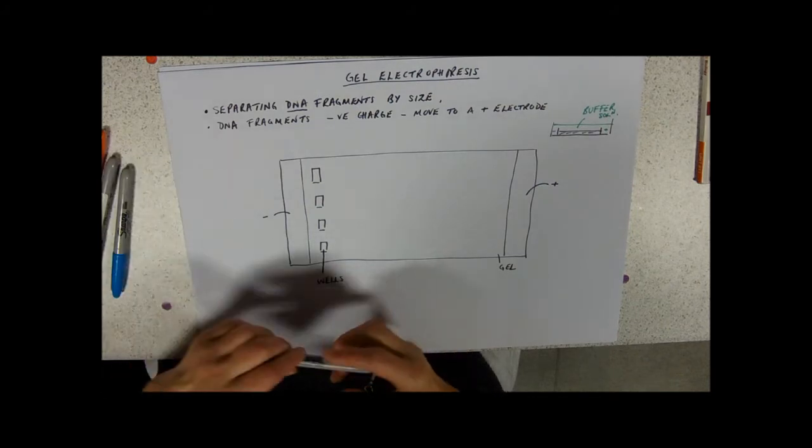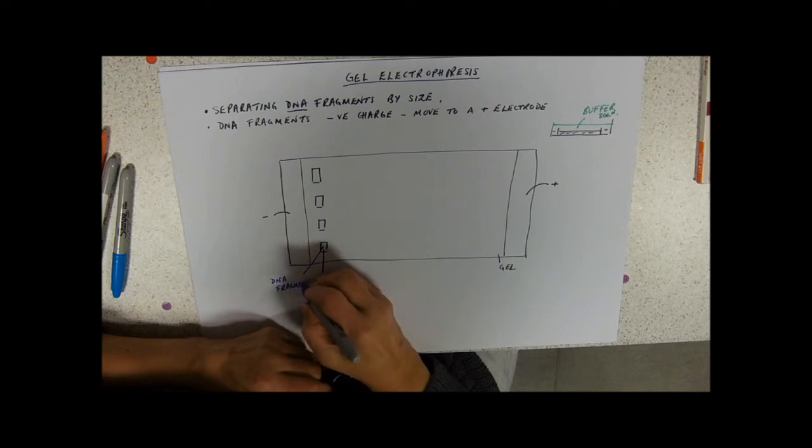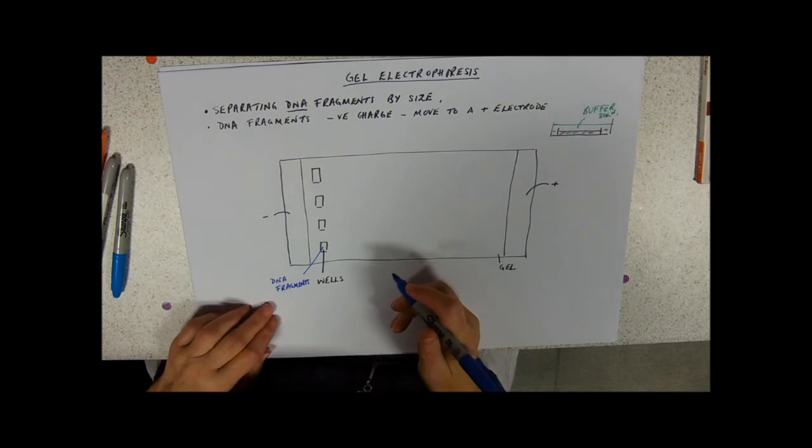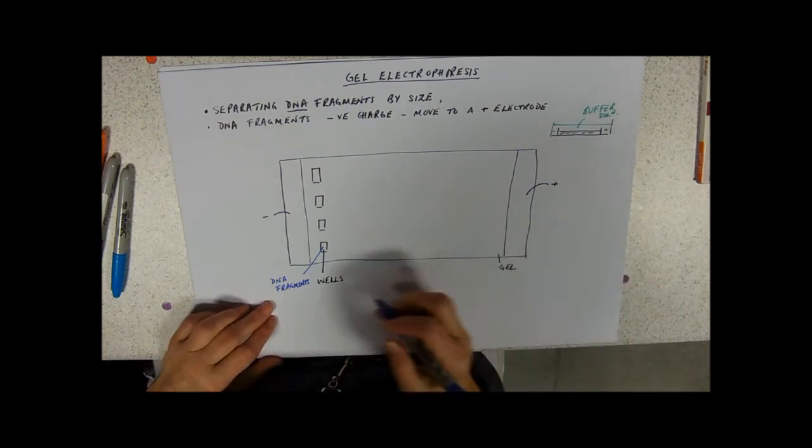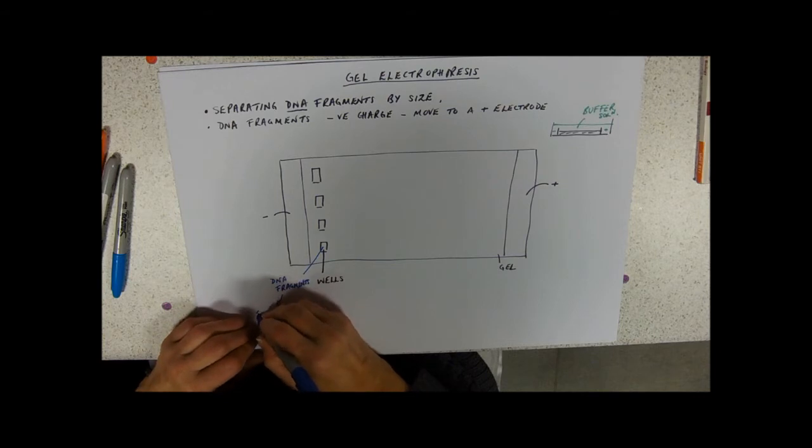So, what are these wells for? These wells are to put DNA fragments in. So where do we get those DNA fragments from?